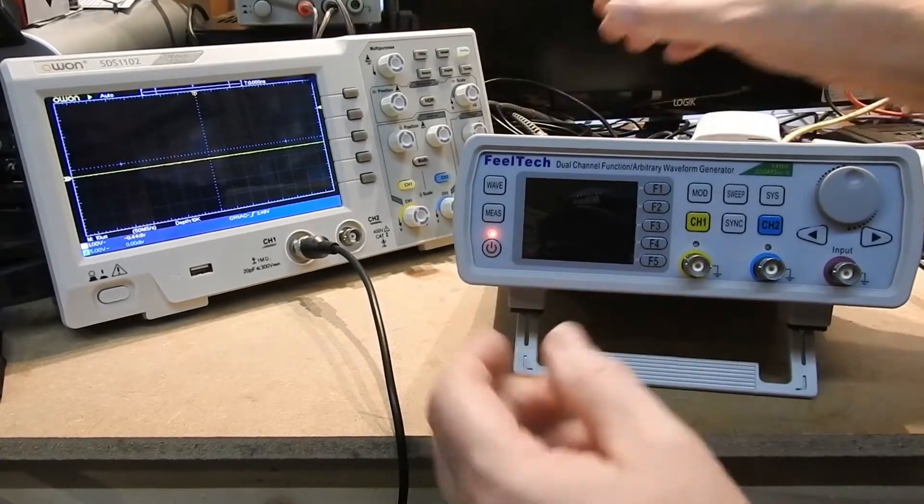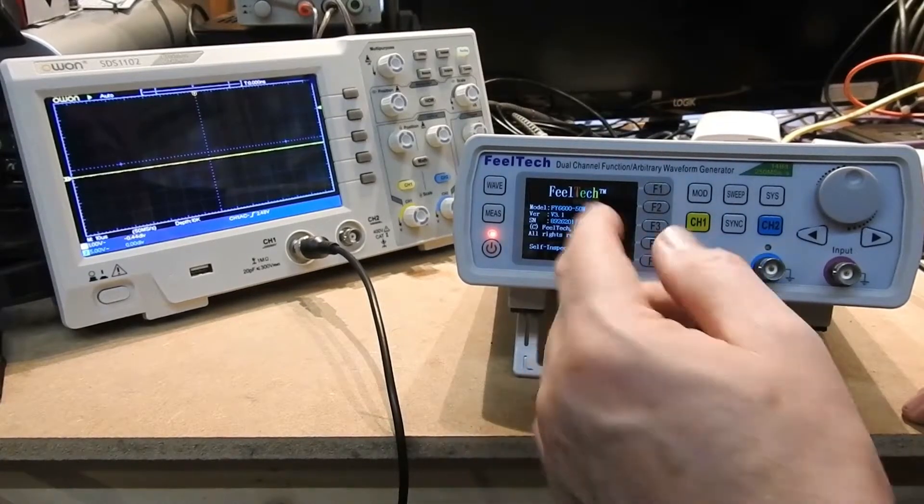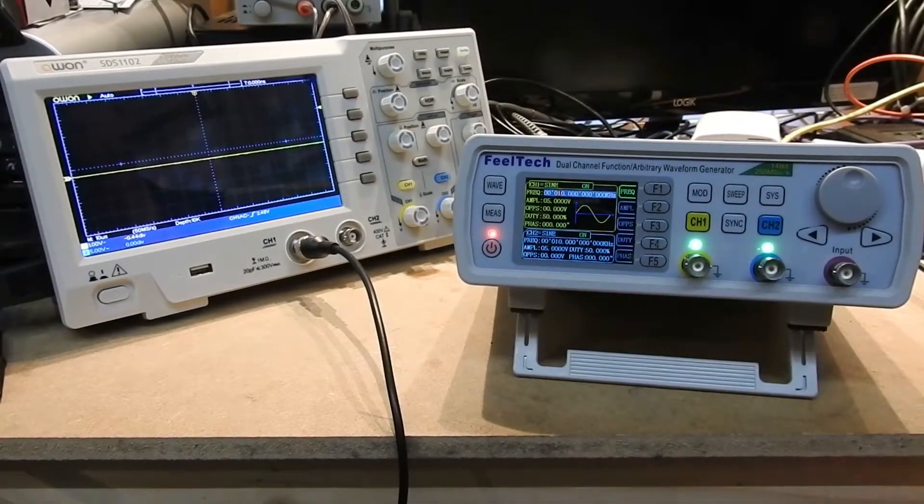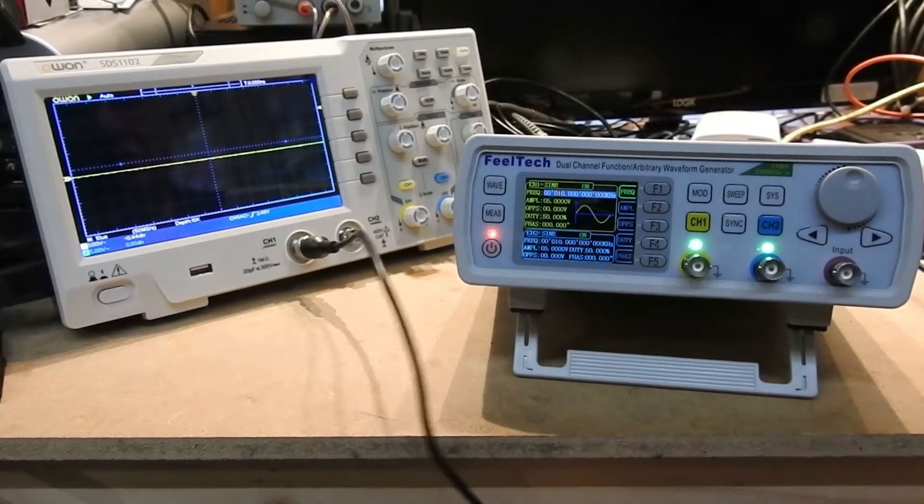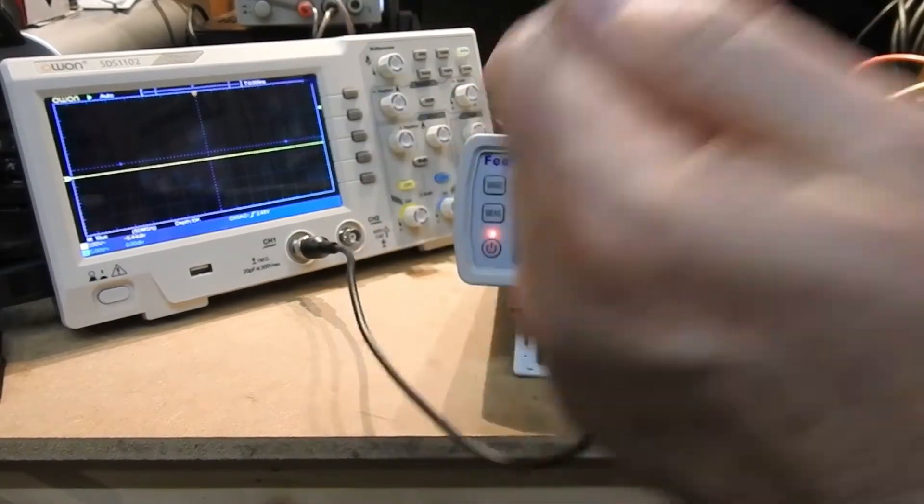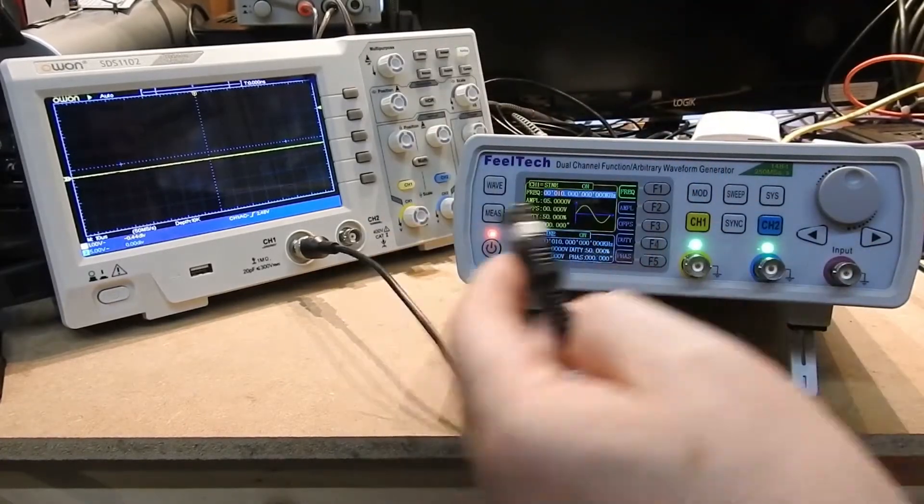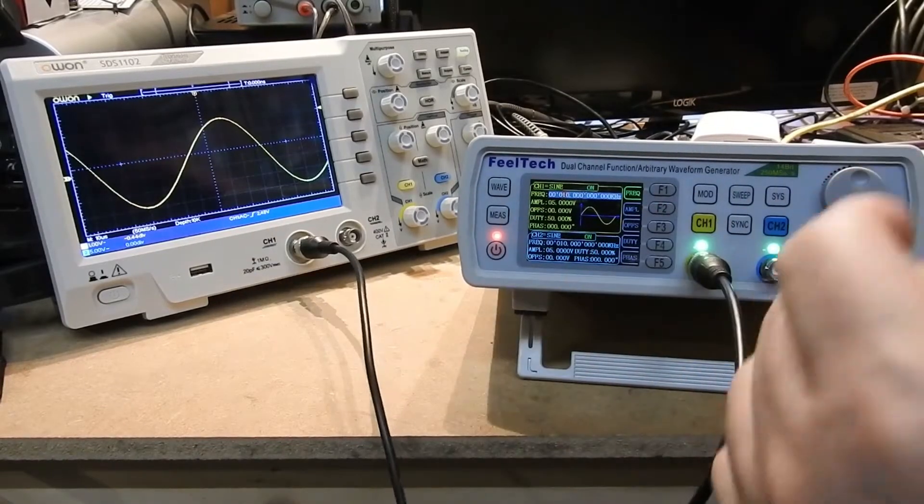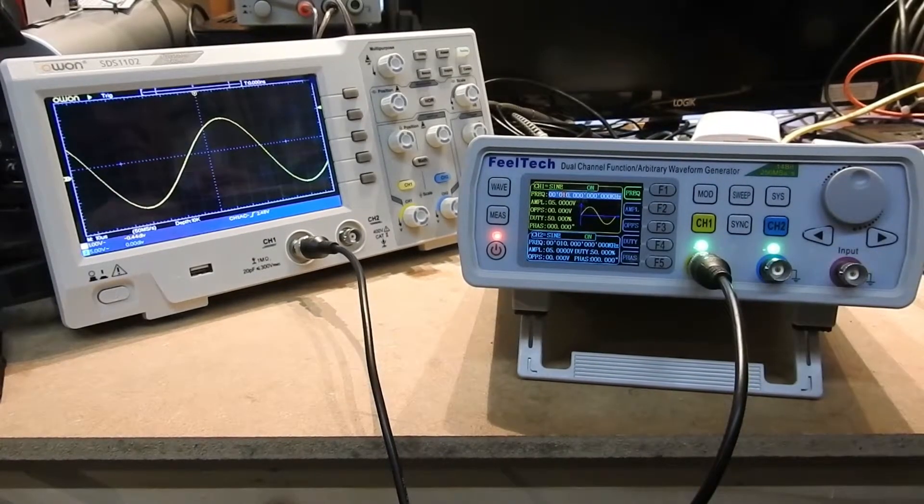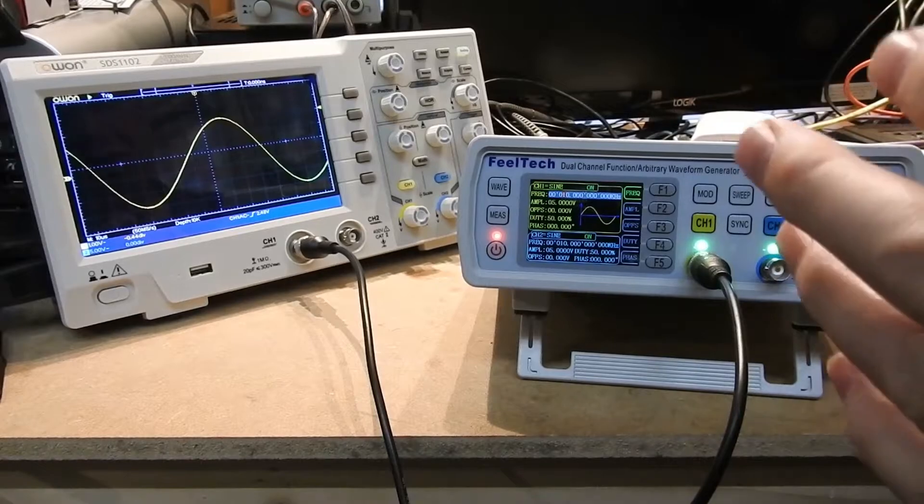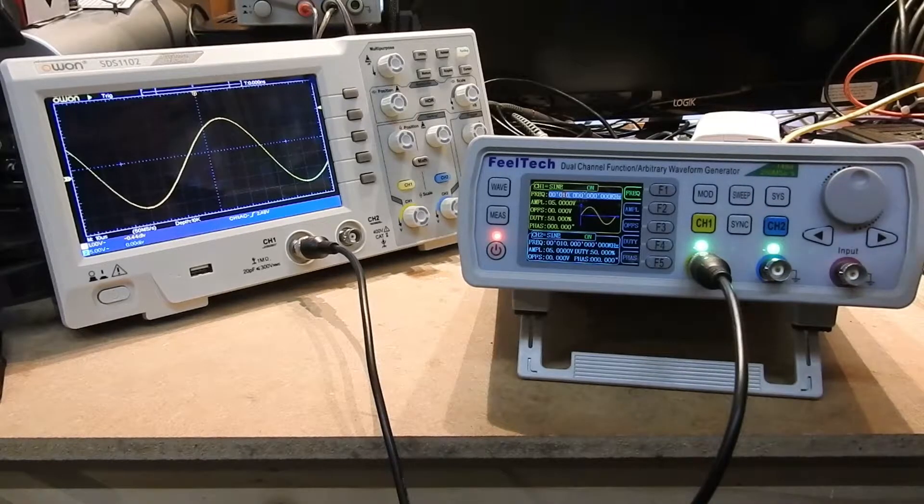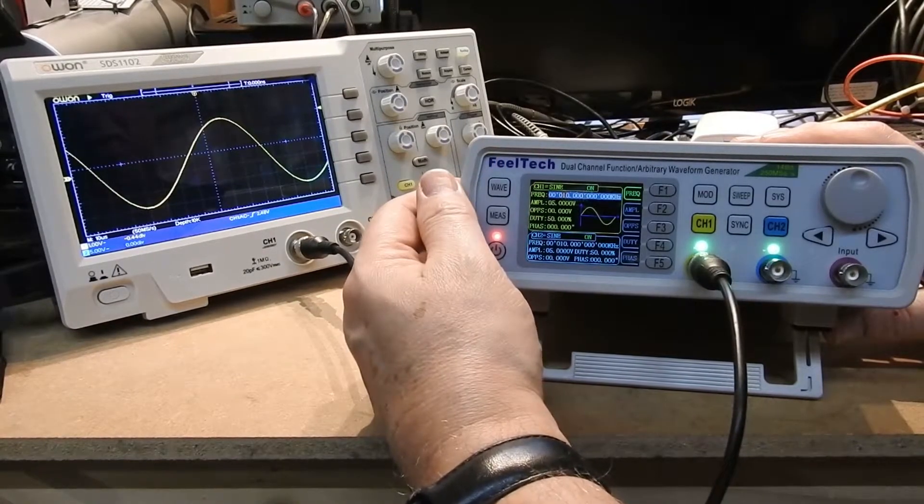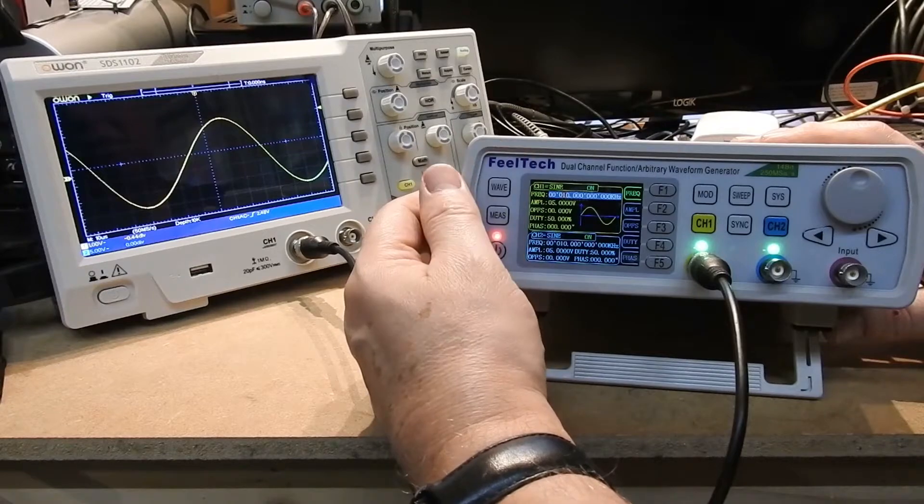So I'll turn it on. We get a welcome with a version number and we're straight into operation. So you'll notice this is a two output, they're independent from each other. Just happen to have that handy lead there and I'll plug the thing into my scope. And as you see, a sine wave out. Battery backup wise, when you turn the power off at the back, any setting changes you make are lost. So use the switch at the front.